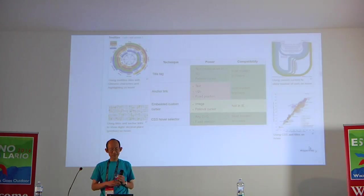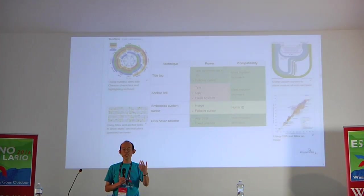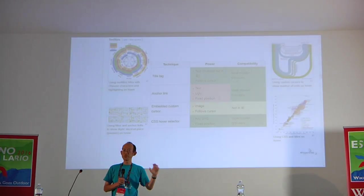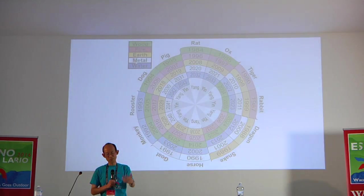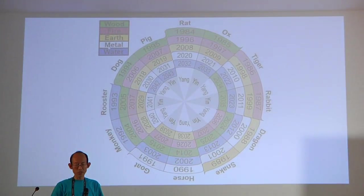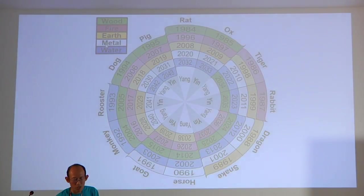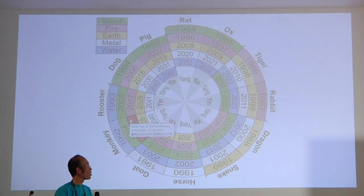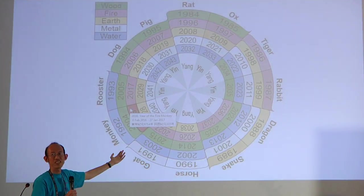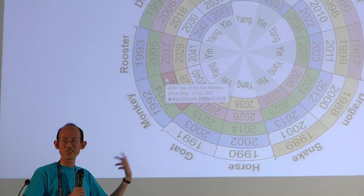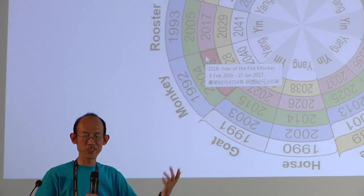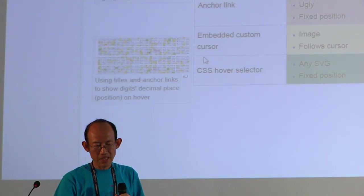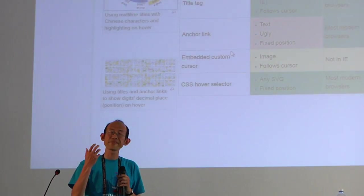One of the most basic forms of interactivity is showing additional information on demand. If I have a diagram, I don't want to clutter it with irrelevant information. For example, this diagram shows how Chinese years — from rats to pigs — and elements correspond to English years. If I hover over 2016, I can pop up more information: year of the Fire Monkey, the dates of the year, and the equivalent Chinese years. This can be done with tooltips, which you can actually do in Inkscape.